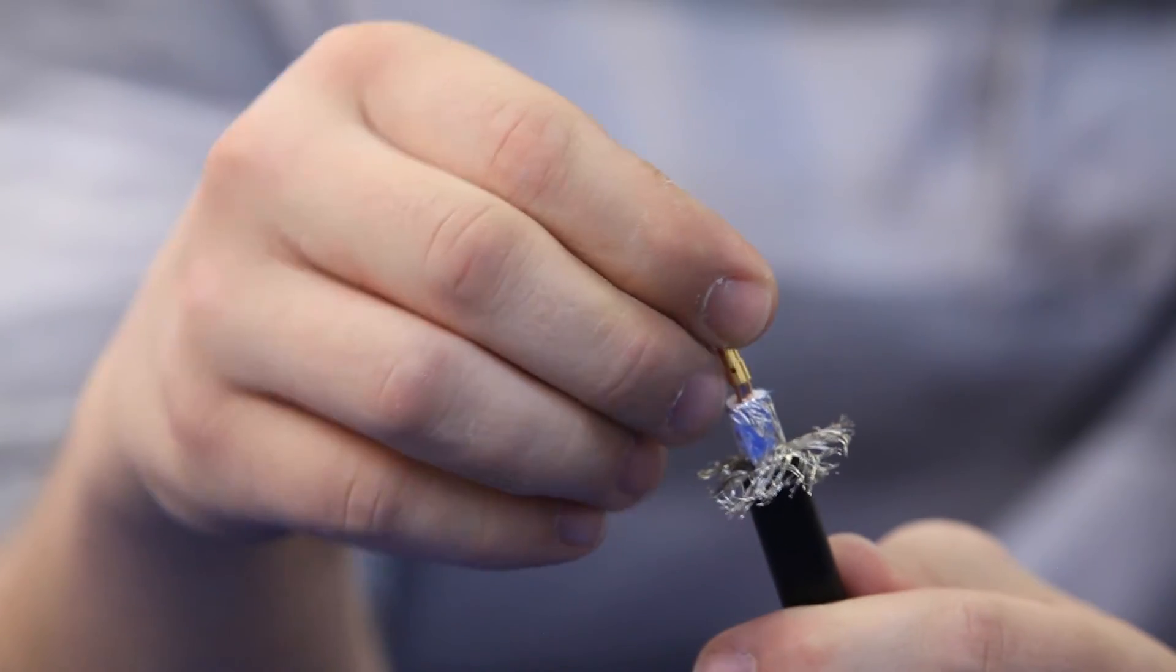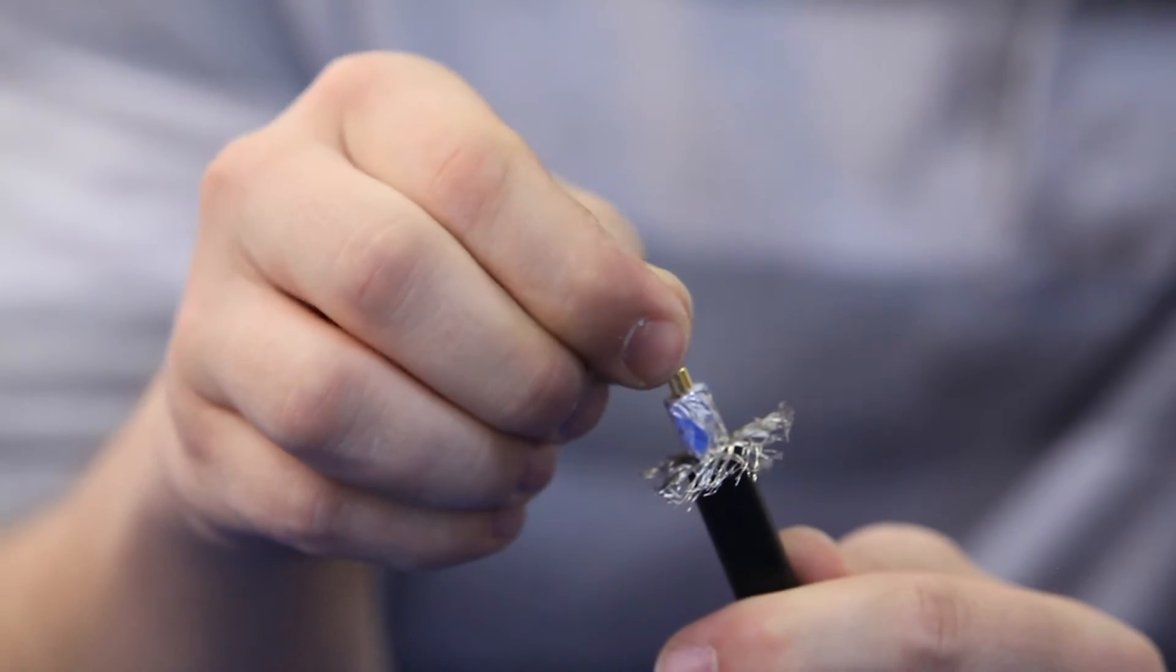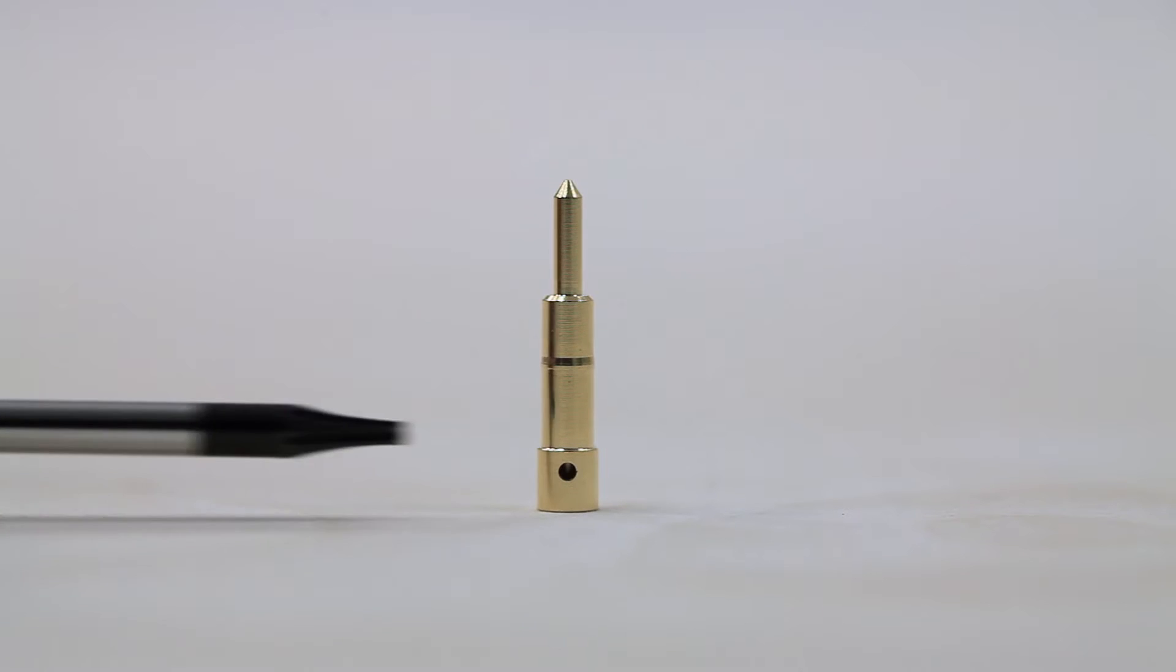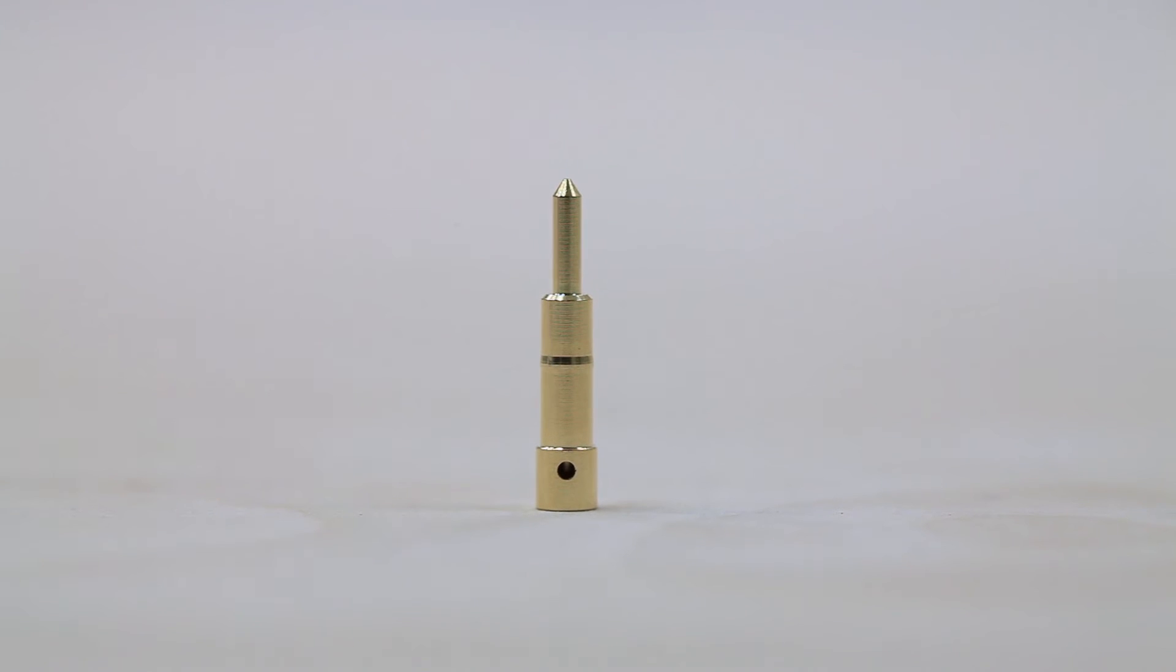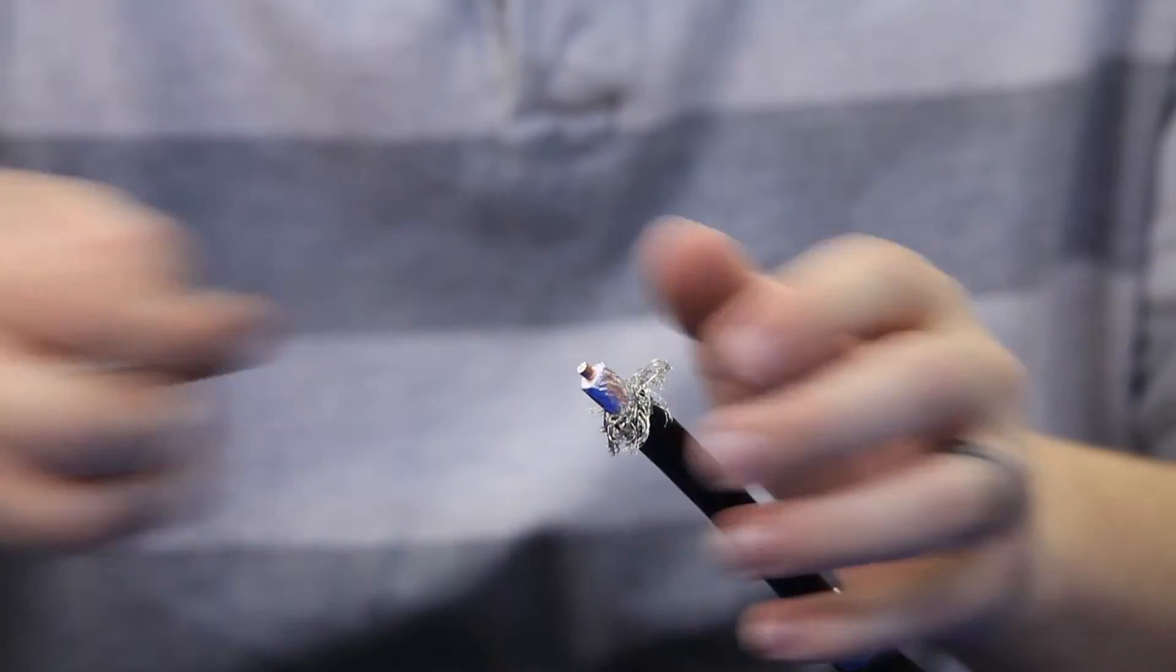Next you'll solder the center pin onto the cable. Take the center pin and slip it over the center conductor on the cable. Notice that there is a small hole in the center pin. Orient the center pin so this hole is facing you. You'll need to trim the center conductor so that it is the proper length to fit the center pin.